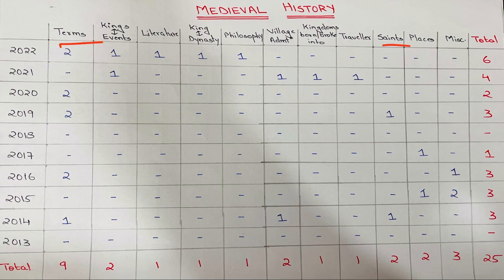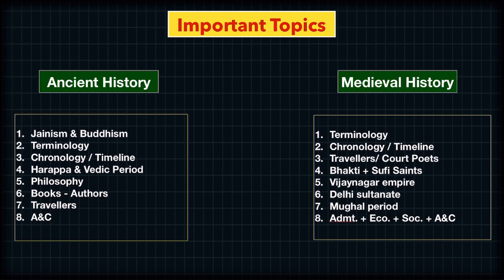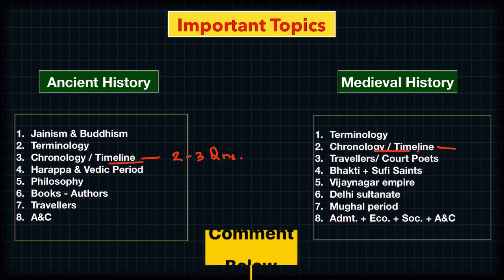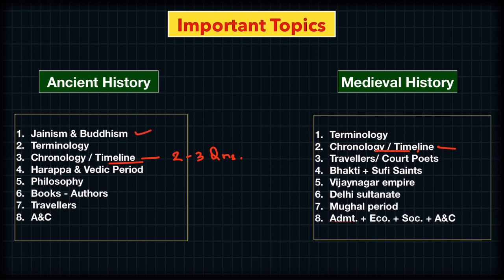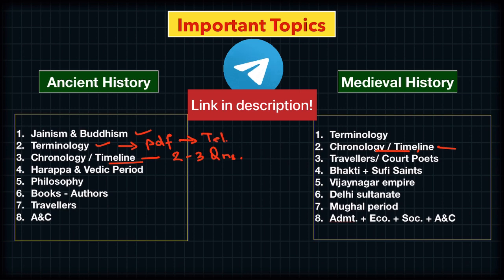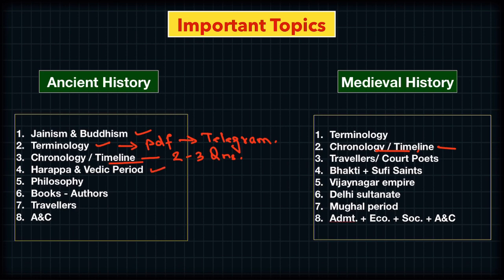First of all, in ancient history, you always need an accurate idea of chronology and timeline, because on this basis alone you can get 2 to 3 questions in the exam including art and culture. If you want a video on the timeline, let me know in the comments. Other important topics include Buddhism, terminologies — a PDF is already shared on the ThinkBasic Telegram channel — Harappa and Vedic period, philosophy, books and authors, travelers, and art and culture in ancient history.